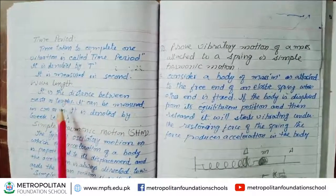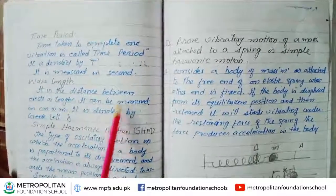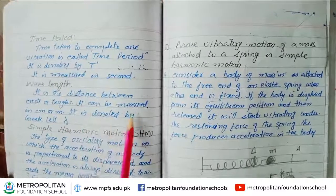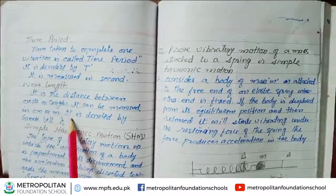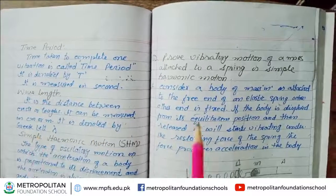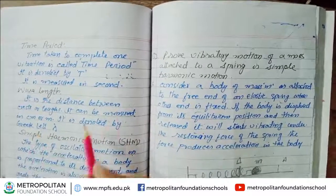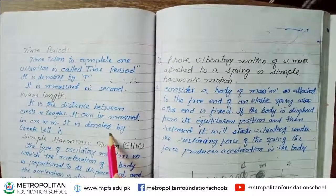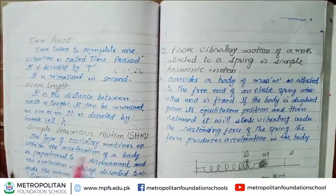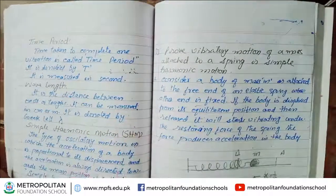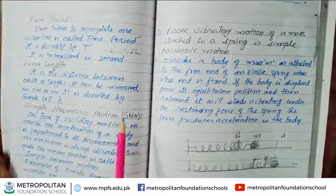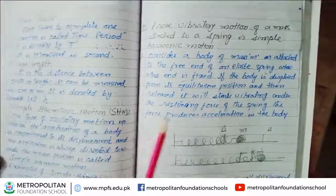Wavelength is the distance between one crest and the next crest. It can be measured in centimeters or meters. It is denoted by the Greek letter lambda (λ). The distance from one crest to the next crest is the wavelength.